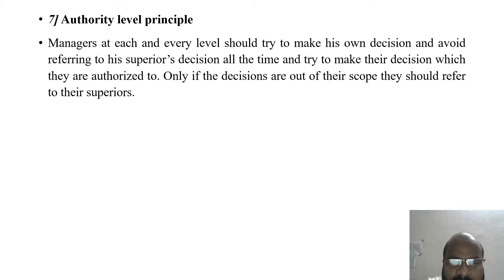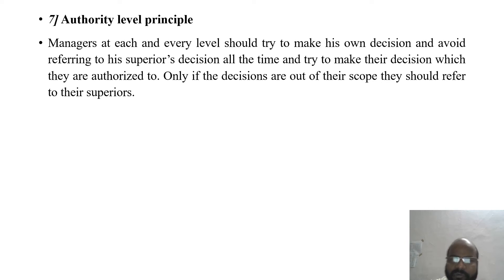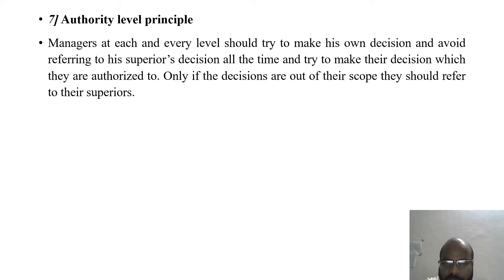Authority level principle: managers at each and every level should try to make their own decisions and avoid referring to their superior's decision all the time. They should try to make decisions they are authorized to make. Only if decisions are outside their scope should they refer to higher authority; otherwise, they are not supposed to refer those decisions to higher level managers or to their superiors.